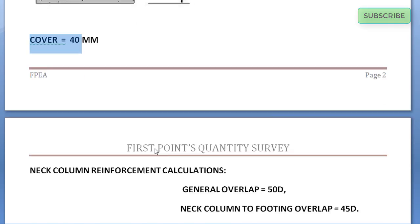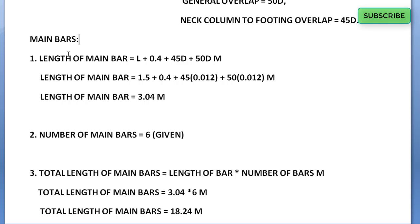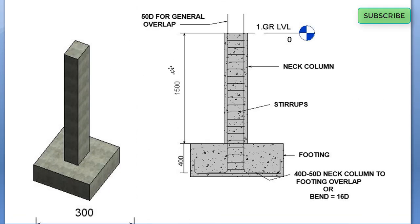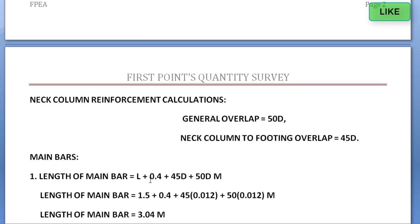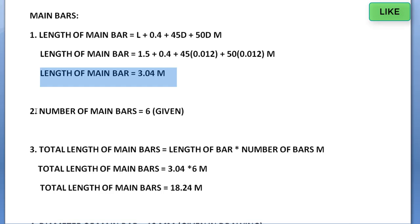For reinforcement calculation: general overlapping is 50d in the column, footing lapping is 45d. The length of main bar formula is L plus 0.4 plus 45d plus 50d. From the drawing, L equals 1500 mm, so substituting: 1.5 plus 0.4 plus 45 into diameter. The length of main bar comes to 3.04 meters.